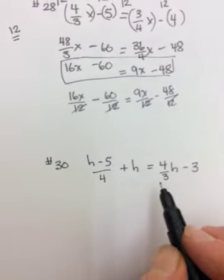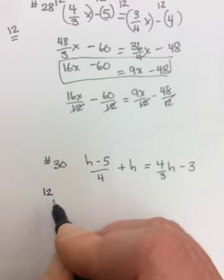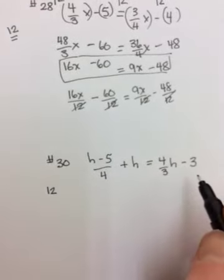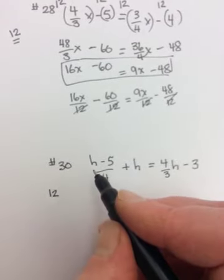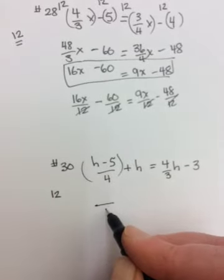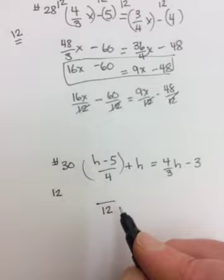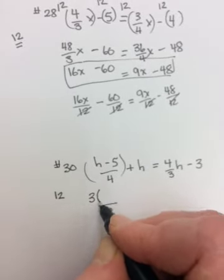All right. And the last one, number 30. Again, what's the common denominator? It is 12. So again, either change everything to something over 12, or multiply every term by 12. So maybe this time I'll change everything to something over 12. So if I want to change this term here, which is over 4, to something over 12, I'd need to multiply the top and bottom by 3. So 4 times 3 is 12, and 3 times h minus 5.